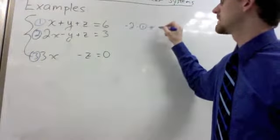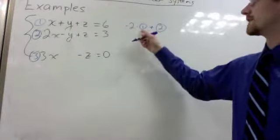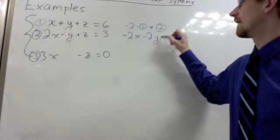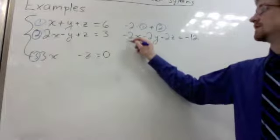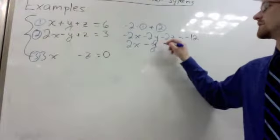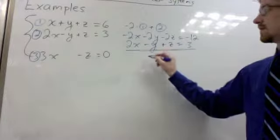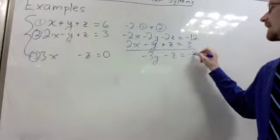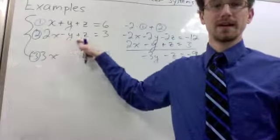So to eliminate x in the second equation, we can take negative 2 times equation 1 plus equation 2. Negative 2 times equation 1 is negative 2x minus 2y minus 2z equals negative 12. And then we add to that equation 2, 2x minus y plus z equals 3. X's cancel out, we get negative 3y minus z equals negative 9.